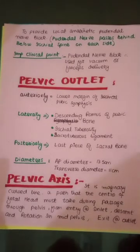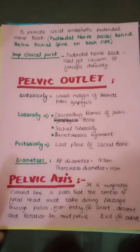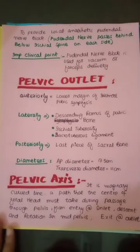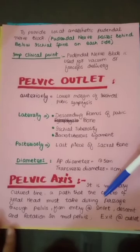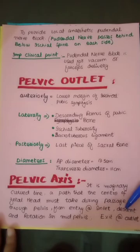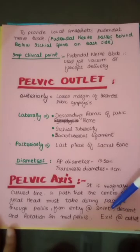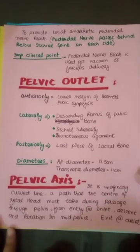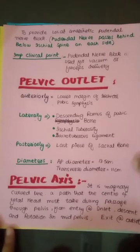The pelvic axis is an imaginary curved line representing the path the center of the fetal head must take during passage through the birth canal — from entry at the pelvic inlet, descent and rotation in the mid-pelvis, and exit at the outlet. Note for MCQs: descent and rotation occur in the mid-cavity, and exit occurs at the pelvic outlet.